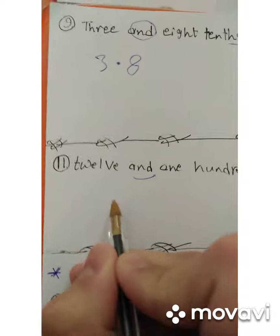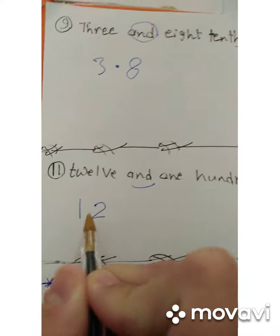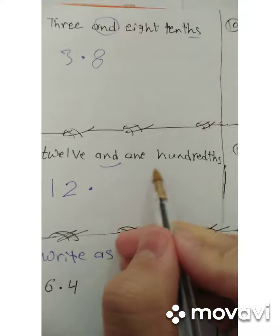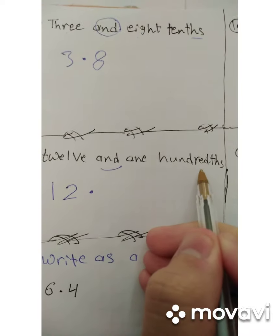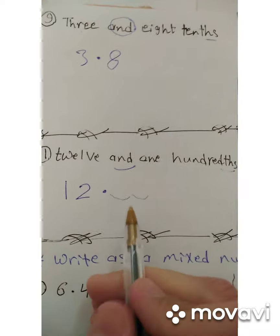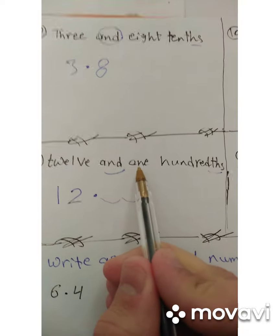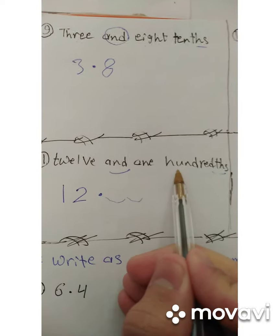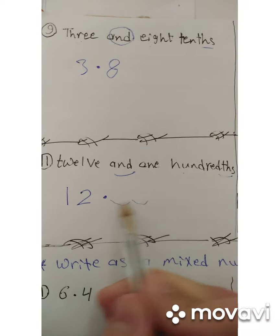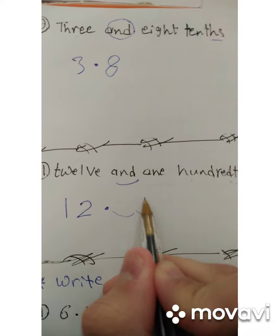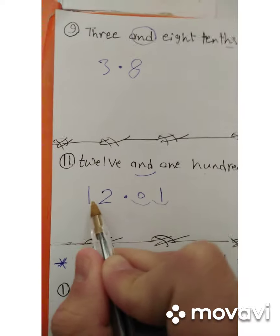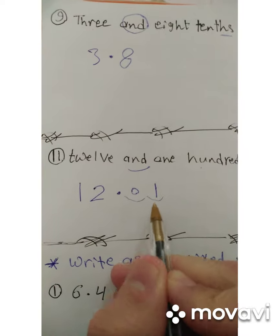Number eleven: twelve and one hundredth. Before 'and' the whole number is twelve — write twelve and put the decimal point. Hundredths means two decimal places, but we have only one. So write one and put zero in front — giving us twelve point zero one, read as twelve and one hundredth.